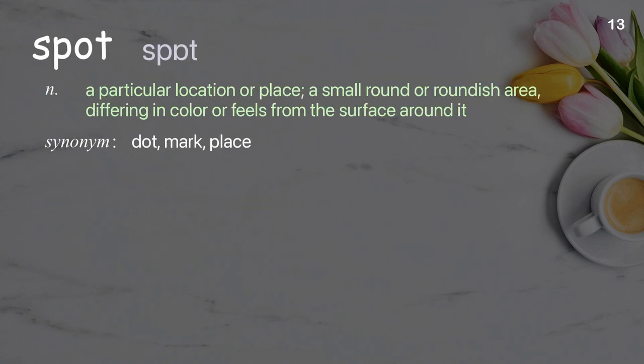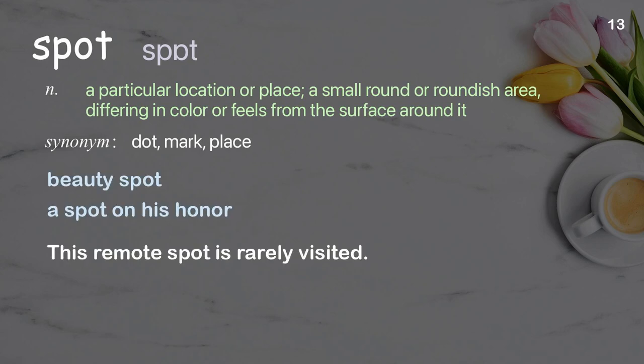Spot. A particular location or place. A small round or roundish area differing in color or feel from the surface around it. Examples: beauty spot, a spot on his honor. This remote spot is rarely visited.